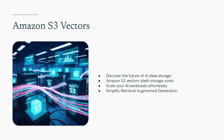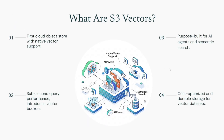Now, you might be thinking: S3, I know S3, it's for storing objects, right? And you'd be absolutely correct. But AWS has just taken S3 to a whole new dimension — literally. They've introduced native support for storing and querying vector embeddings directly within S3. This isn't just a new feature; it's a new type of S3 bucket, specifically designed for your AI workloads.